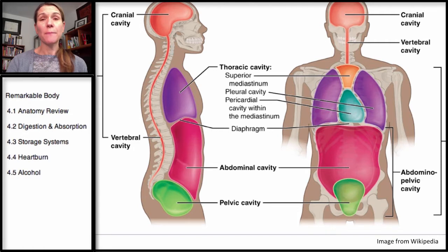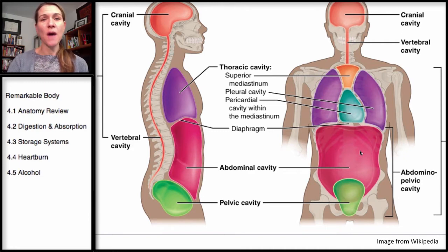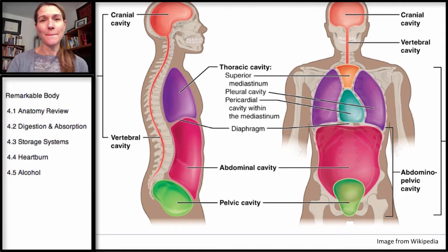We're going to start with just a brief review of human anatomy, looking at the basic cavities in the body — from the cranial cavity to the thoracic cavity, where we have the lungs and the heart, the abdominal cavity, which is where we'll be focusing as most of the digestive tract is within this portion of the body, and then the pelvic cavity.